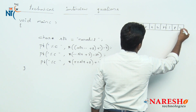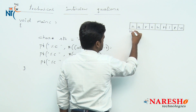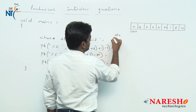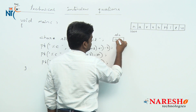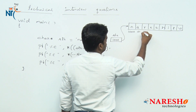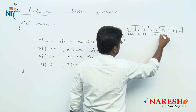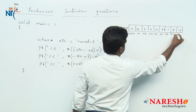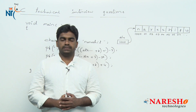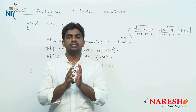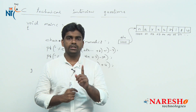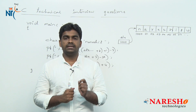The last character is of course null. The base address is considered 1000. The string variable holds the value 1000, pointing to the string. Each character occupies only one byte, so the character location size is one byte.